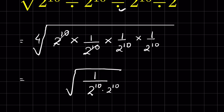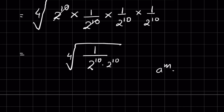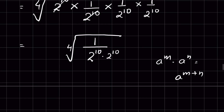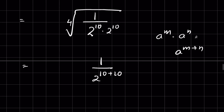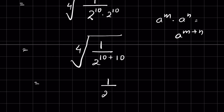There is an identity: a raised to the power m times a raised to the power n is equal to a raised to the power m plus n. Using this identity, it becomes 1 upon 2 raised to the power 10 plus 10, under the fourth root.